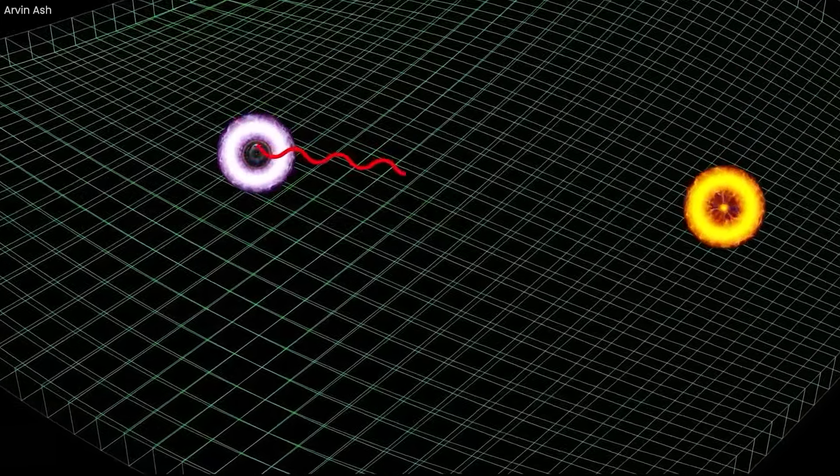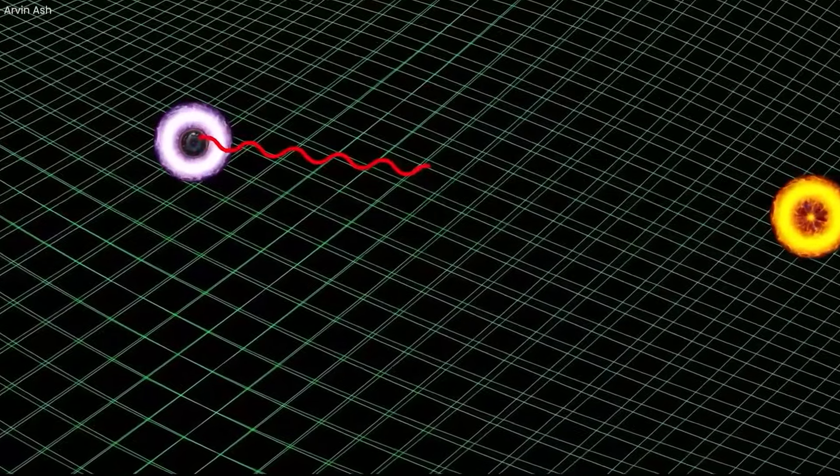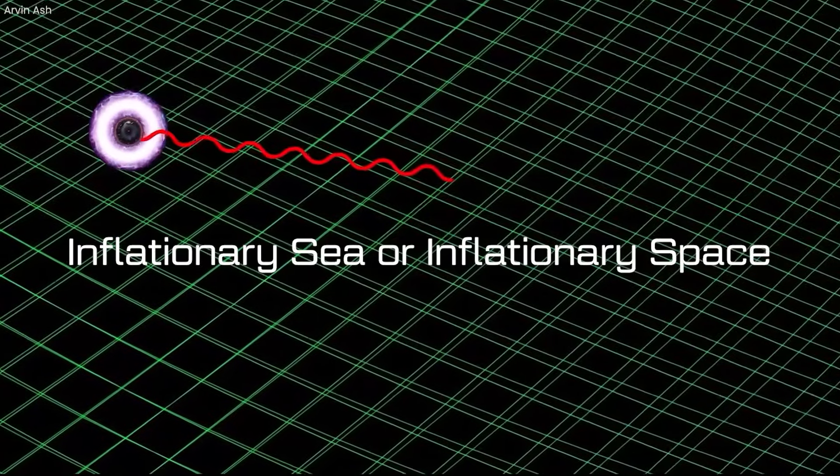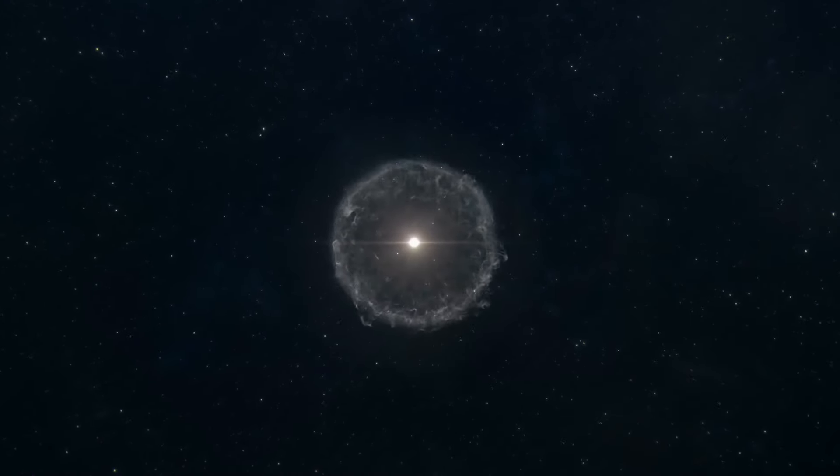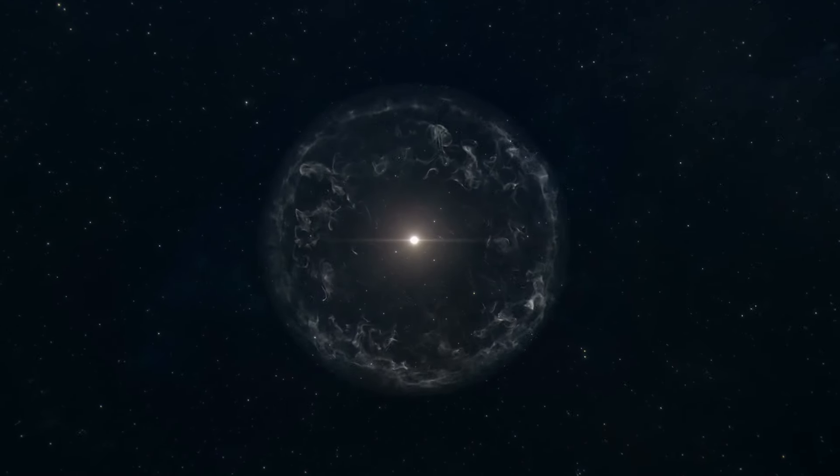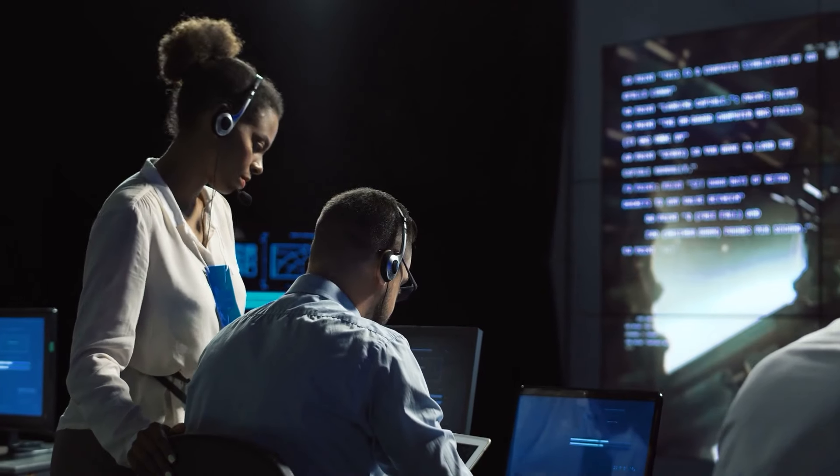These bubbles are separated by inflating space that grows faster than light, often called inflationary sea or simply inflationary space. This space is not empty but filled with quantum fluctuations and false vacuum energy that can create more bubbles.